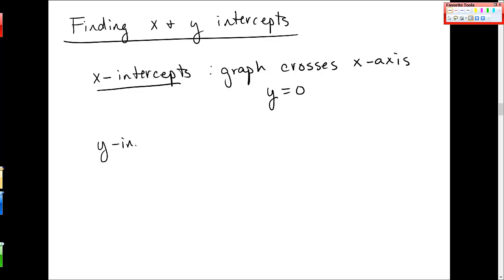To find the y-intercept, this is where the graph crosses the y-axis. That's at a vertical line that's x equal to 0.